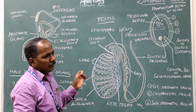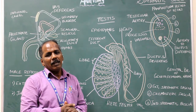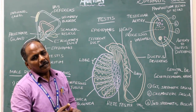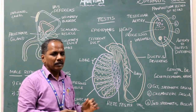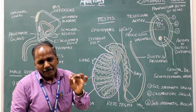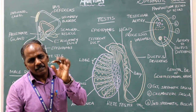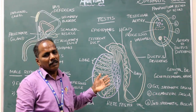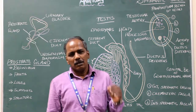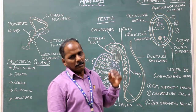Blood supply: right and left testicular artery. Venous drainage: pampiniform plexus of veins drains the testes.